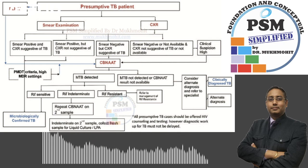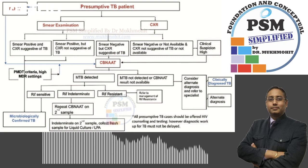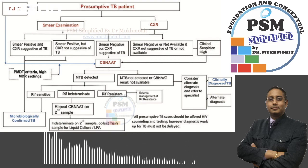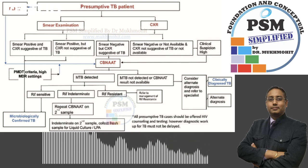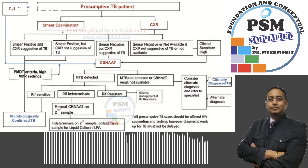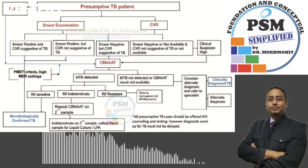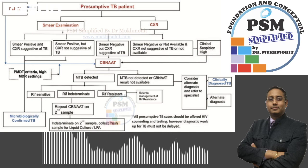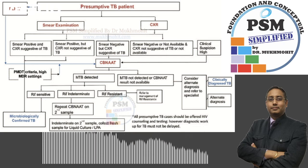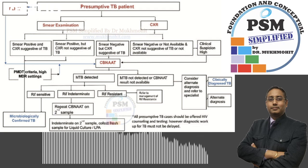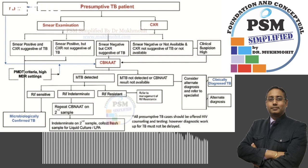In case the smears are negative and the patient already has a chest X-ray, we refer that patient to a CB-NAAT laboratory only if the X-ray is suggestive of TB changes. If the smears are negative and the patient does not have a chest X-ray, we ask for a chest X-ray to be done. If that X-ray is suggestive of TB, we again refer the patient to CB-NAAT.